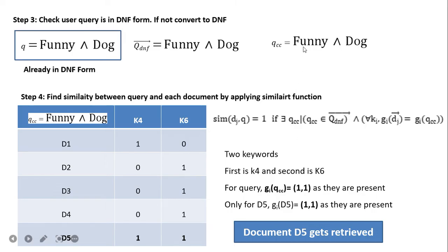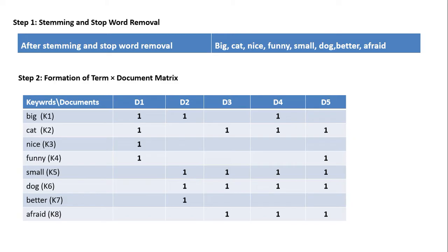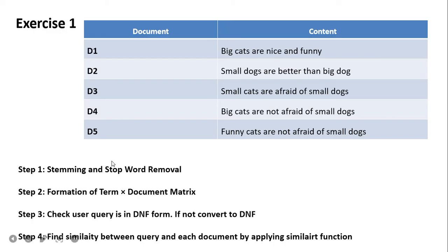In the query 'funny AND dog,' we represent presence as (1,1) — funny present and dog present. If not present, we use 0. The gi(qcc) pattern is (1,1), and we get this same pattern only for document d5. Therefore, only document d5 has both keywords 'funny' and 'dog' present. This is the answer from the Boolean model: it retrieves document d5.